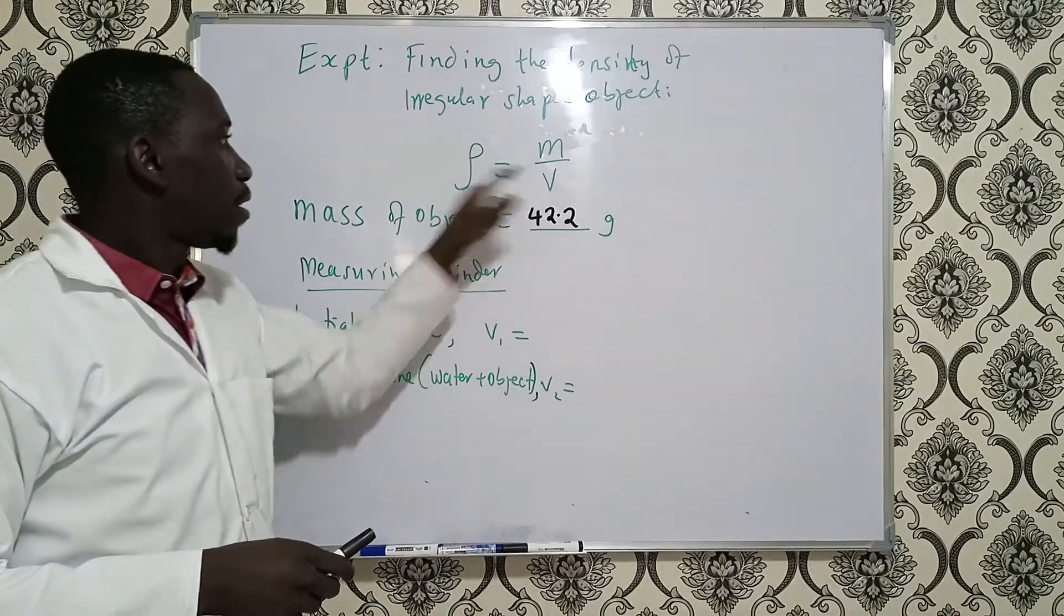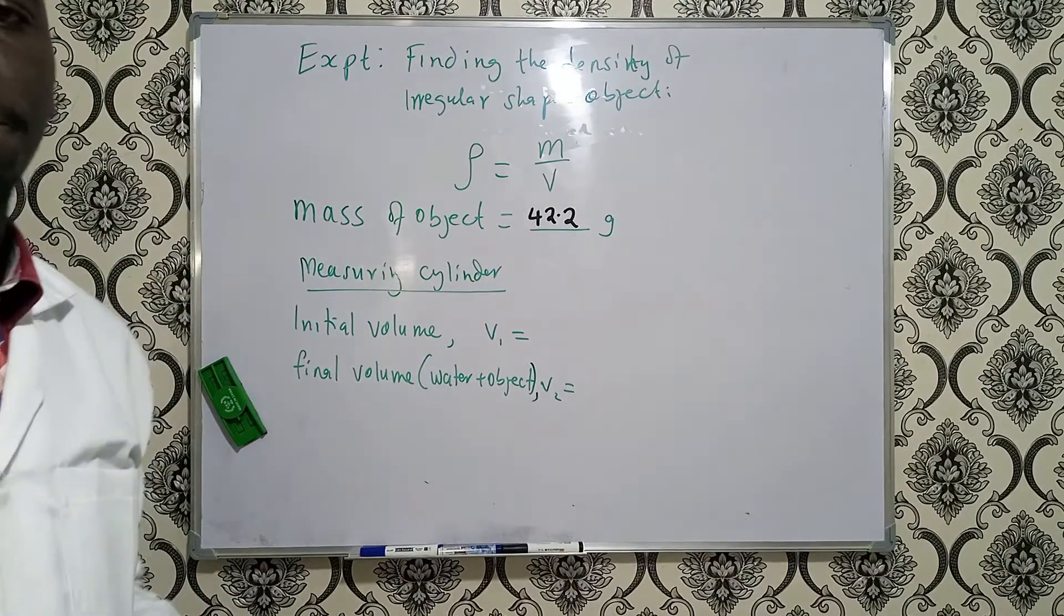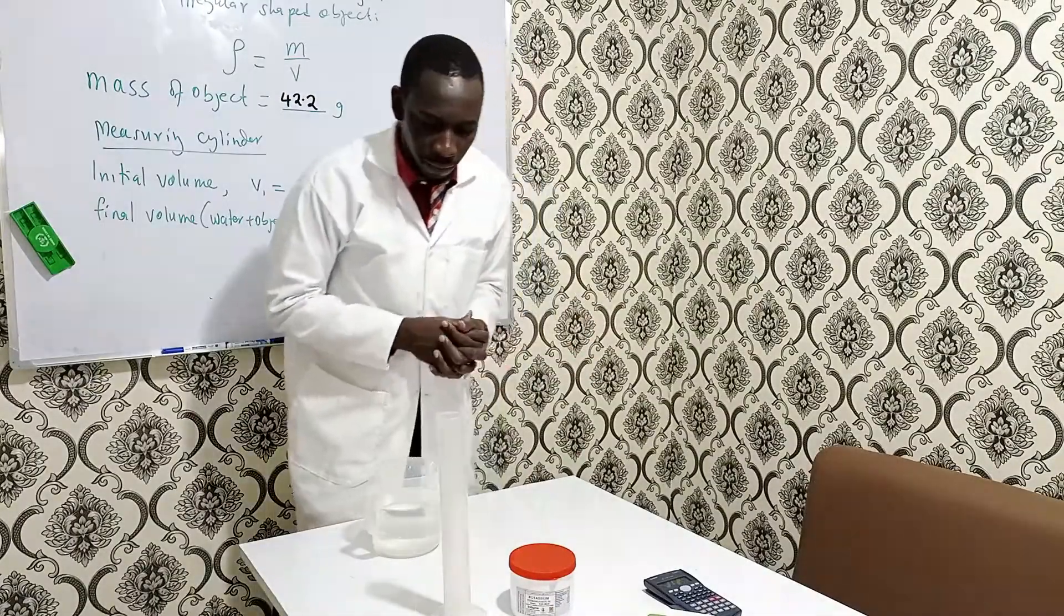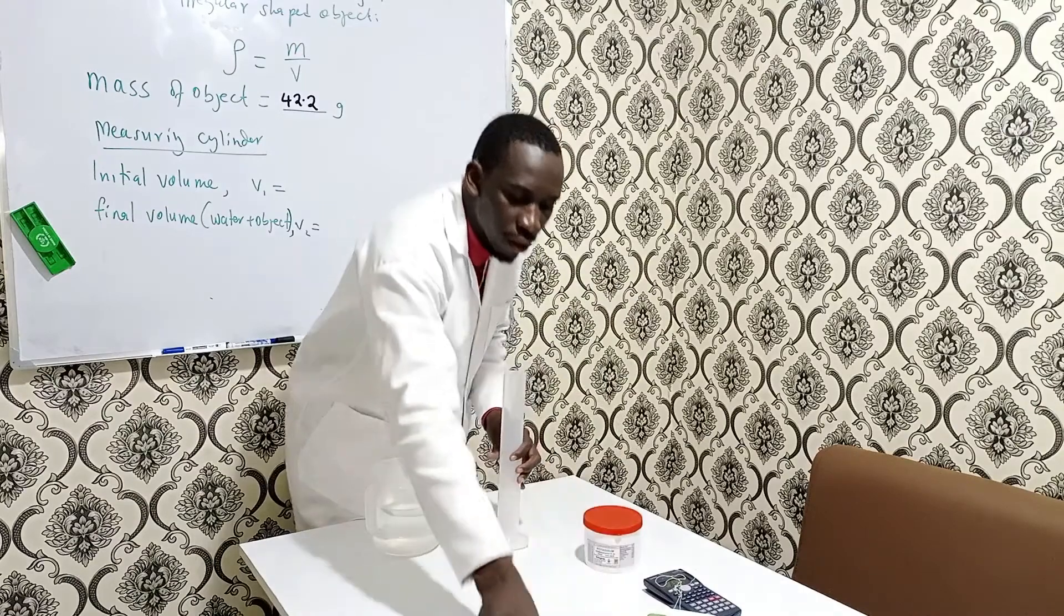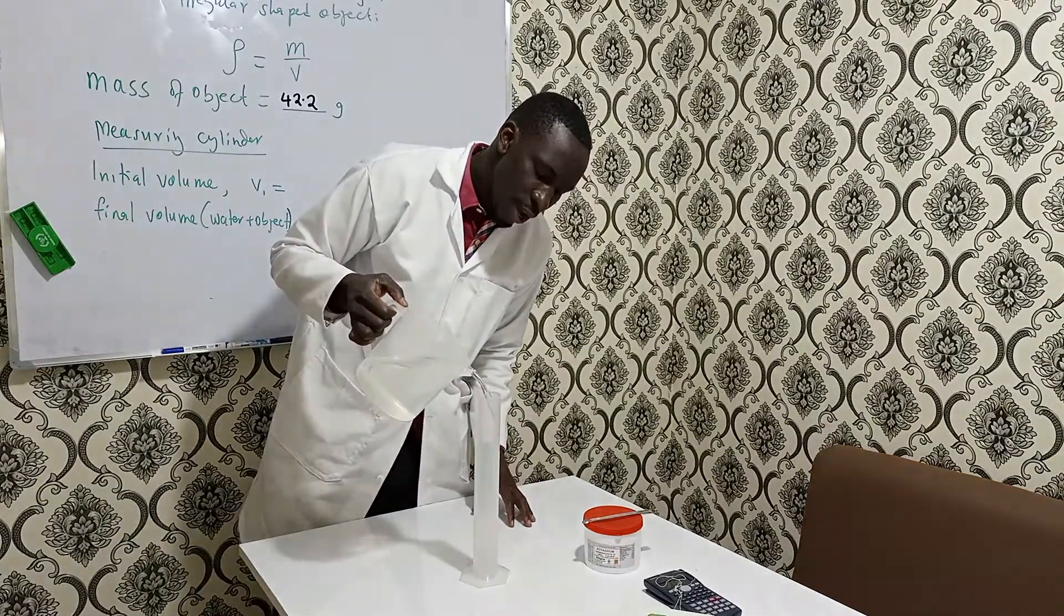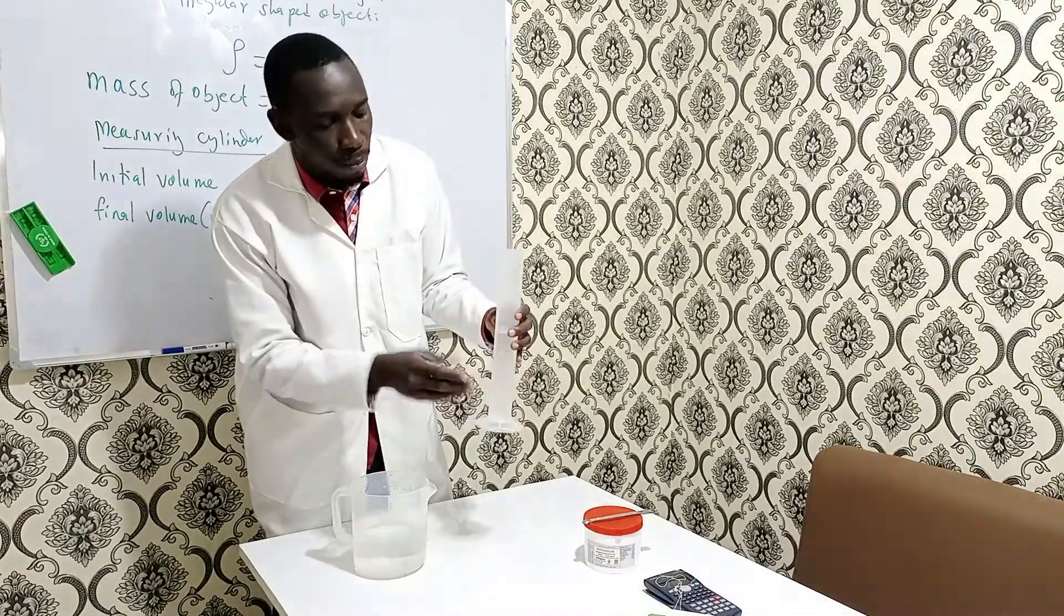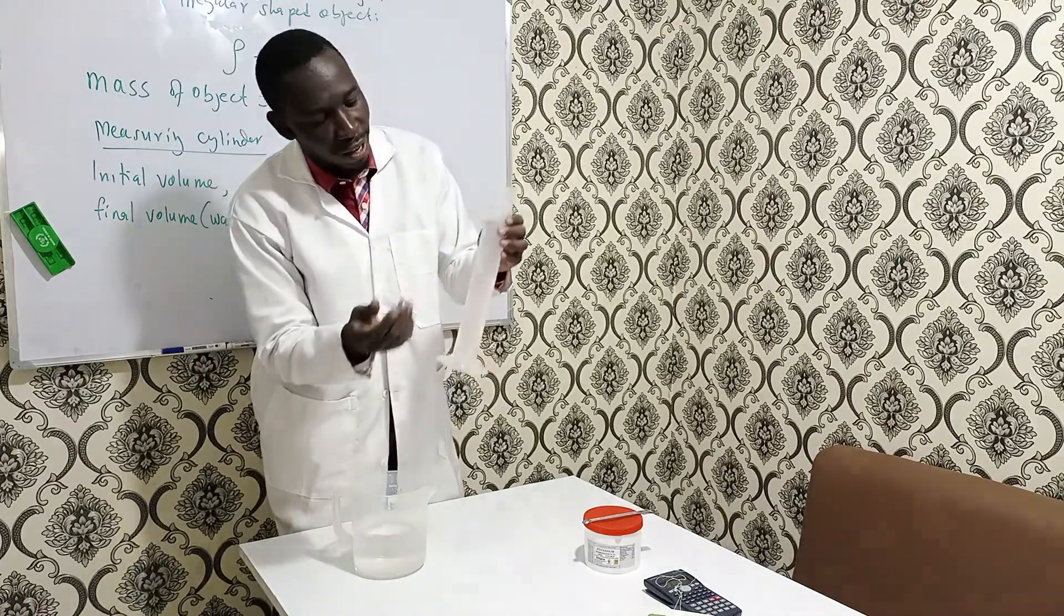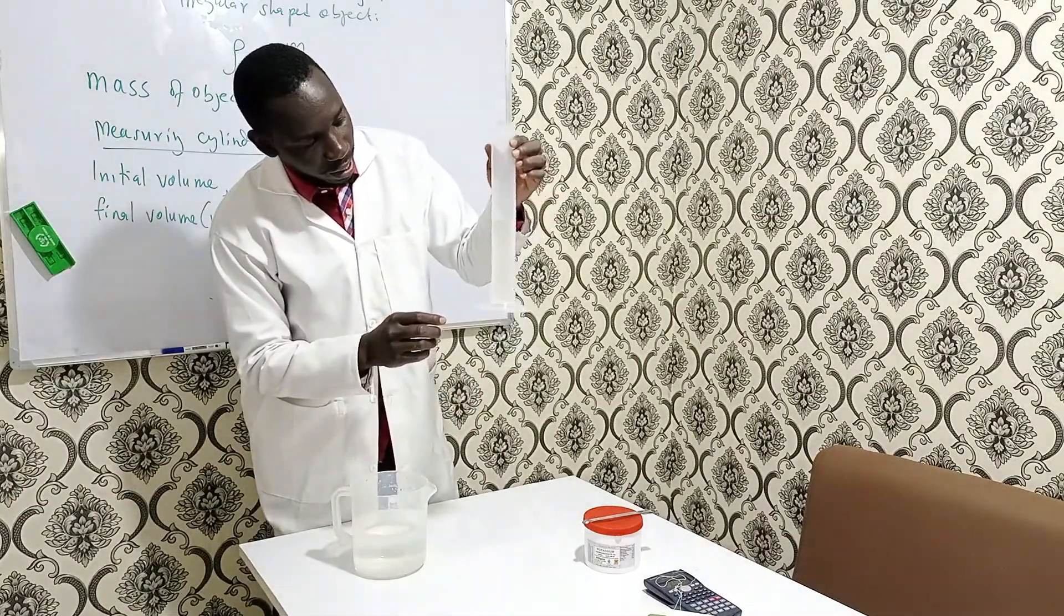The next thing is to find the volume, which we are going to use the measuring cylinder. And then, how are we going to do that? So, the first thing to do is to pour water. We are using the displacement method to find the volume of this object because it is a regular shaped object. The first part, you don't need to worry about the exact volume. So, we can just approximate. More than a half. Just approximate.